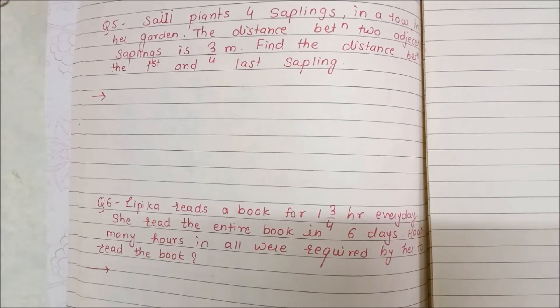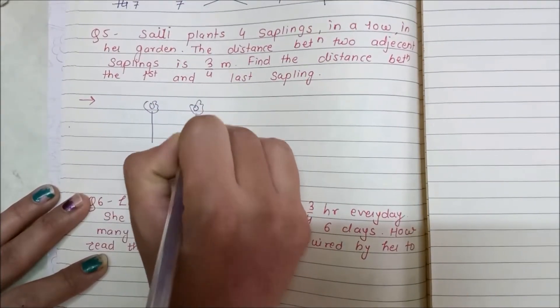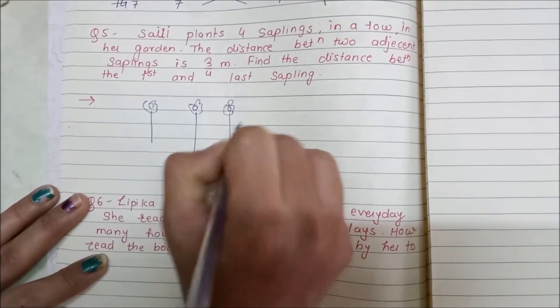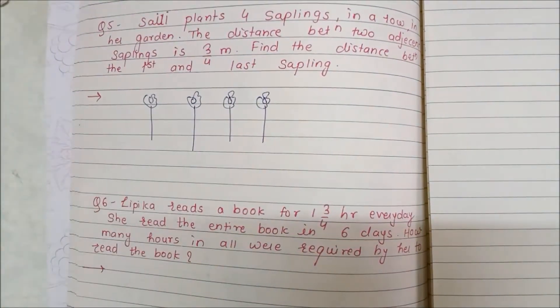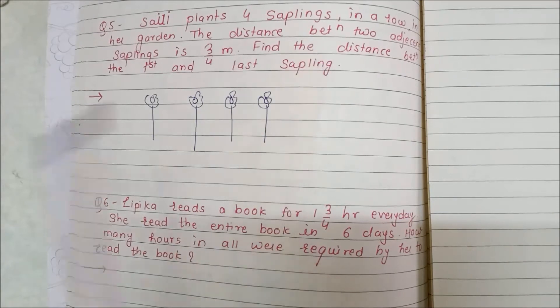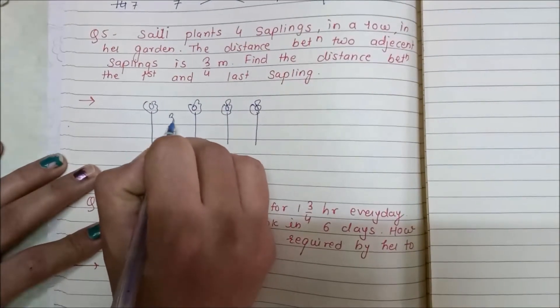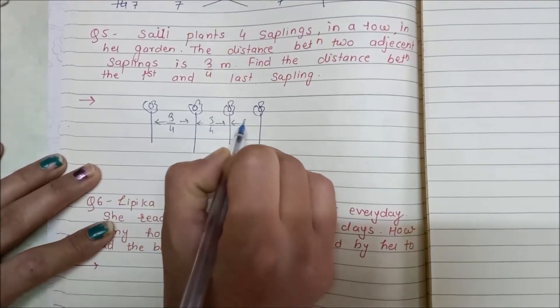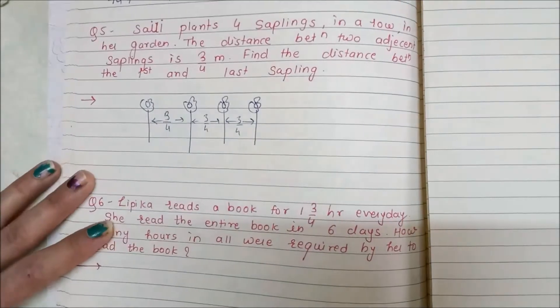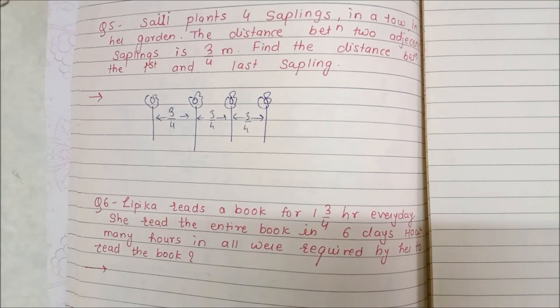Saili plants 4 saplings in a row. The distance between 2 adjacent saplings is 3/4. So we have 4 saplings with 3/4, 3/4, 3/4 distance kept between them.